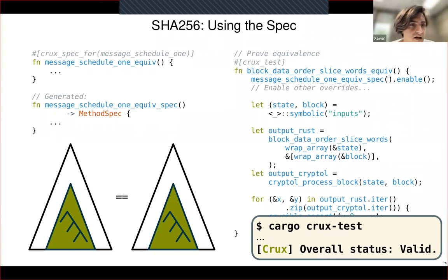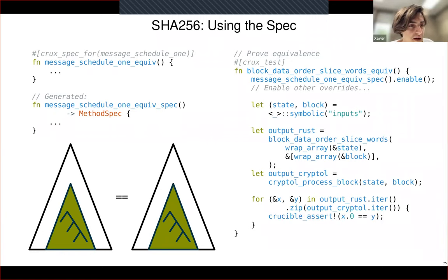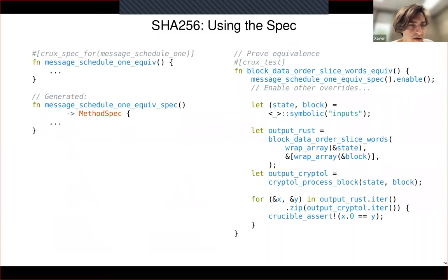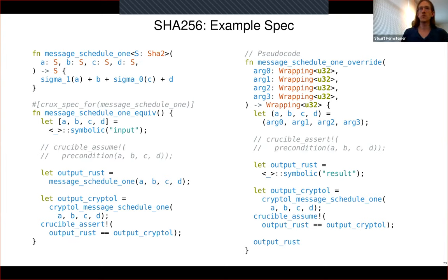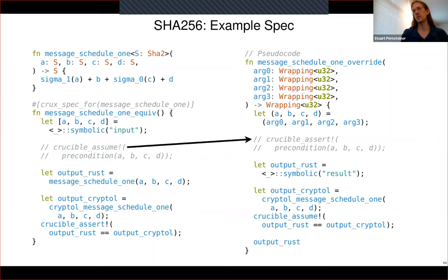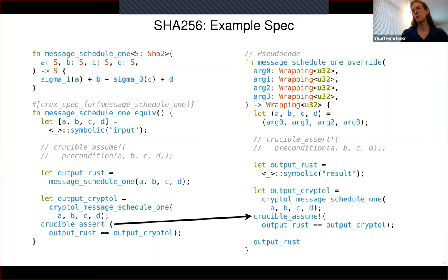Audience question: Can you recap what parts the user actually writes versus what parts are generated by the tool? Answer: The message_schedule_one_equipped test case at the bottom left of the slide is written by the user, in the same style as an ordinary symbolic test. The one on the right is generated. We have an automated transformation that goes through these pieces and flips them around — all your assertions become assumptions, all your assumptions become assertions — to produce the override.